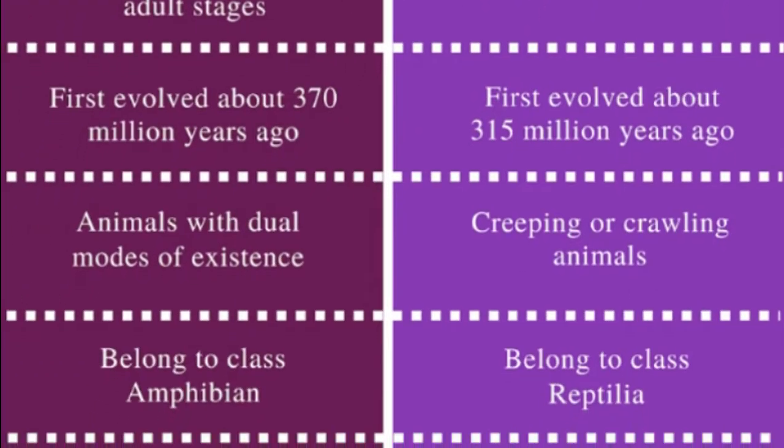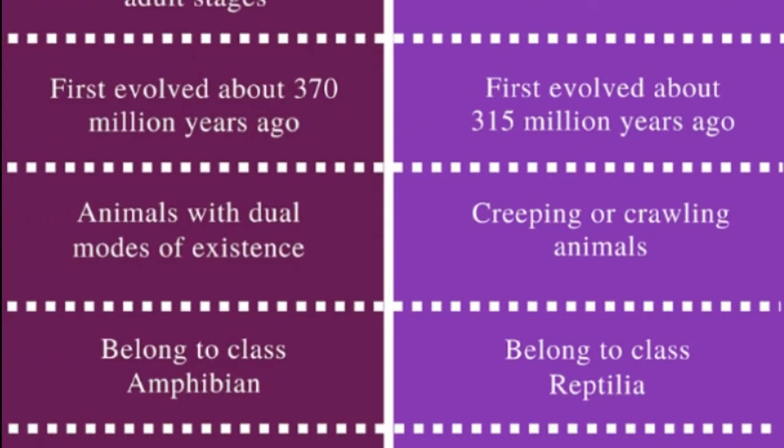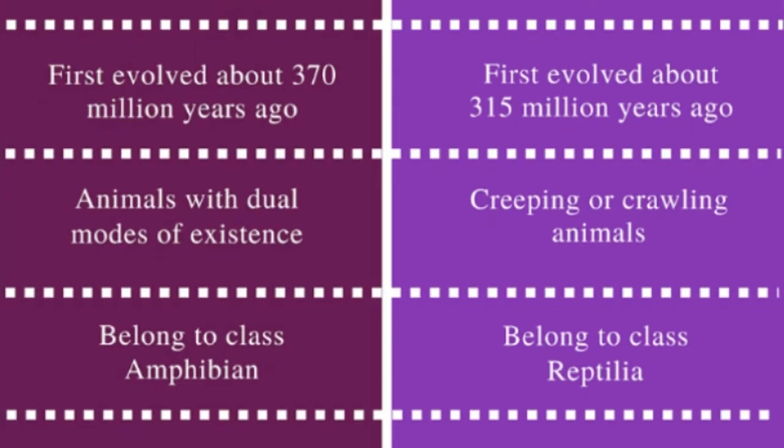Amphibians first evolved about 370 million years ago, and reptiles first evolved about 315 million years ago.